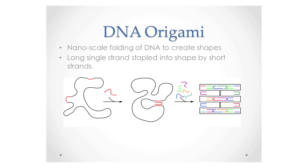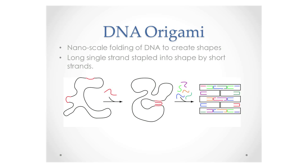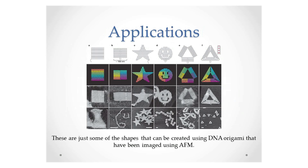DNA origami is the nanoscale folding of DNA in order to construct shapes. This is done by adding shorter strands of DNA that are complementary to a single strand of longer DNA. The shorter staple strands form a double helix with the longer strand, and this interaction causes the molecules to fold and form shapes around 100 nanometres in size. For many scientists the ability to manipulate such tiny molecules is incredibly exciting, and it has many applications including aiding the delivery of cancer drugs to specific areas of the body.